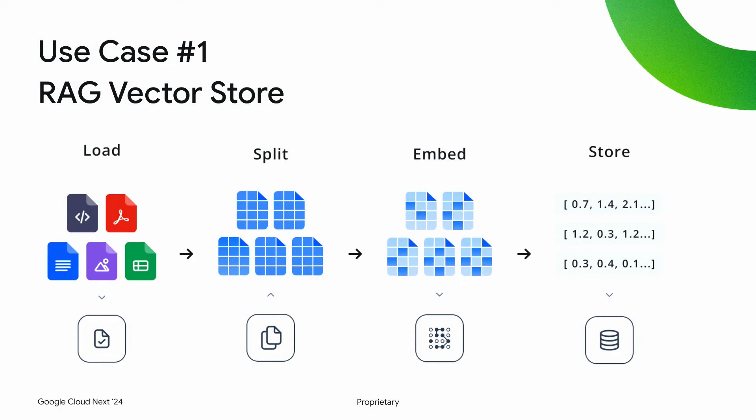Thanks for that intro. About two months ago, we started working much more deeply on all of these integrations. There are actually a lot of different places where you need databases inside your GenAI application. One of the most common is using databases as a vector store to do Retrieval Augmented Generation. The basic idea is that LangChain and other GenAI apps combine LLMs with external sources of data and computation, and a vector store for RAG is a key component of that.